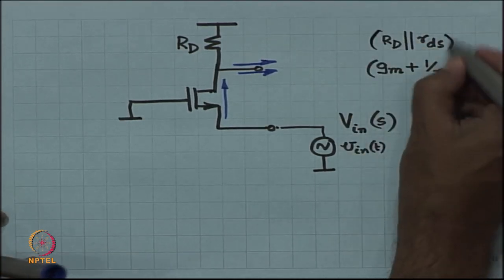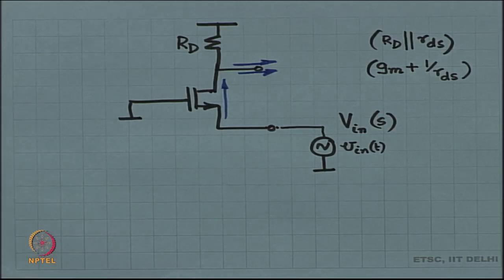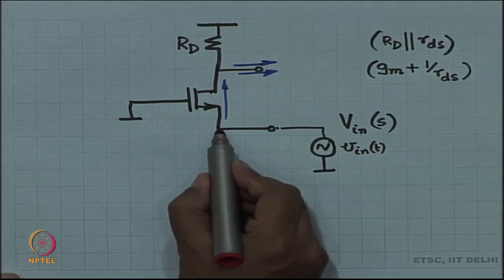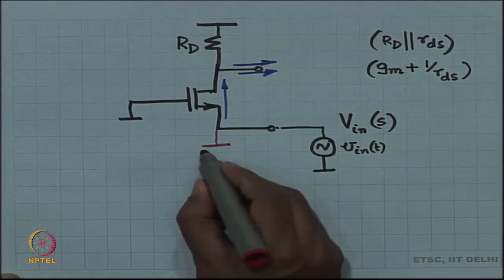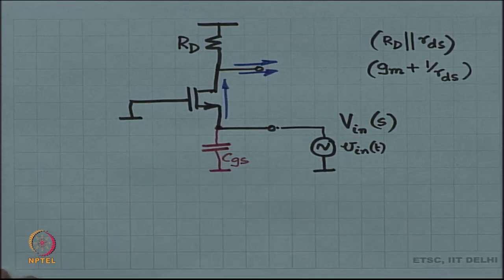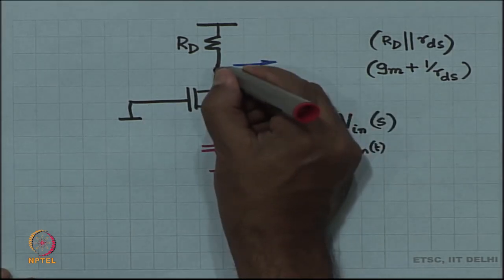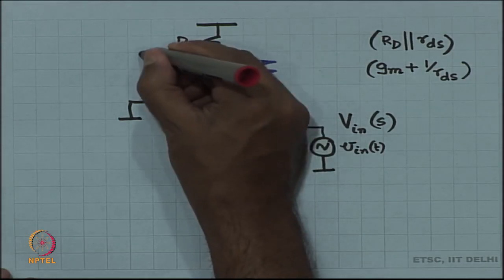This is the short circuit transconductance and this is the output resistance — what happens at DC. However, we are now going to take into effect all the different capacitors in the MOSFET. First, we have Cgs between gate and source. The gate is at ground, so effectively it is a capacitor from the source to ground. Then we have Cgd, gate to drain. Once again, gate is at ground, so Cgd is essentially a capacitor to ground from the drain.